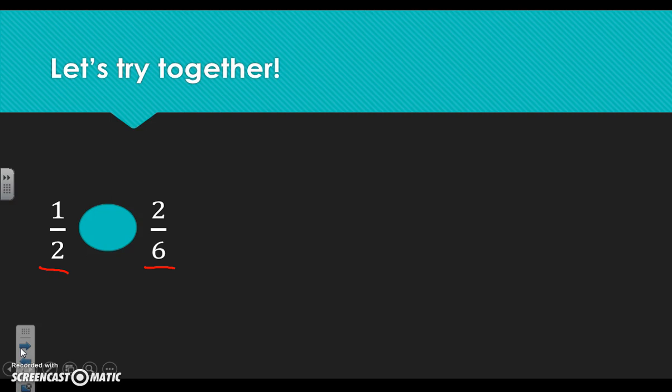A good way to start is to list out your multiples — let's write five out for each. Starting with one half, we take two and list its multiples: two, four, six, eight, ten. Let's stop and take a look at six and the multiples it has to see if there's a multiple they have in common.